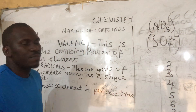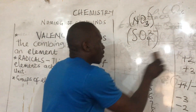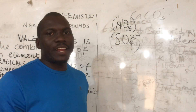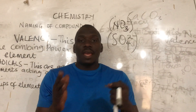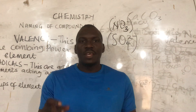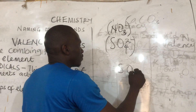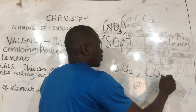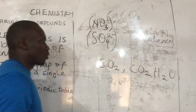Let's work on one or two examples of how to name chemical compounds. Let's start with binary compounds. Binary compounds are compounds that have two elements. For example: SO₂, CO₂, H₂O — they each have two elements.